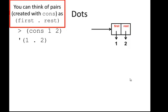So you can think of pairs created with cons as first dot rest. Ultimately, that's what's happening inside of Racket, but it sometimes prints it a little prettier than that.